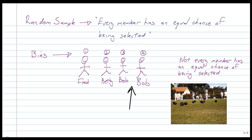Now, what happens if it's not a random sample? It's called having a biased sample or a sample with bias which then brings in errors. The whole idea is you want to reduce the errors that you have. Now, bias is when not every member has an equal chance of being selected. So, if you think again of Fred, Betty, Bob and Bob.